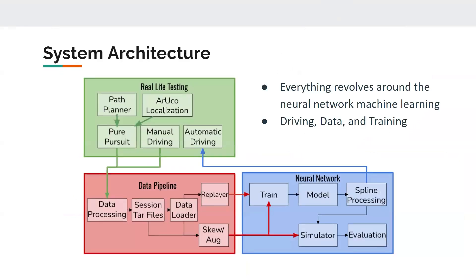So the overall system all revolves around our neural network, which is a machine learning model. And the goal of this network is to be able to drive and steer the car based on an input image from the camera.